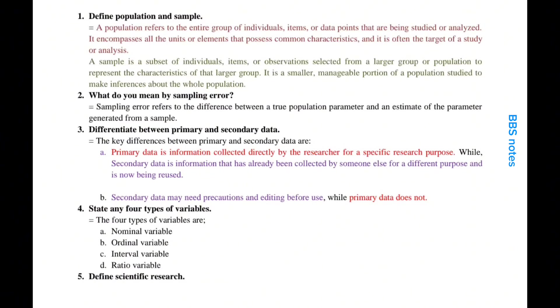What do you mean by sampling error? Sampling error refers to the difference between a true population parameter and an estimate of the parameter generated from a sample.